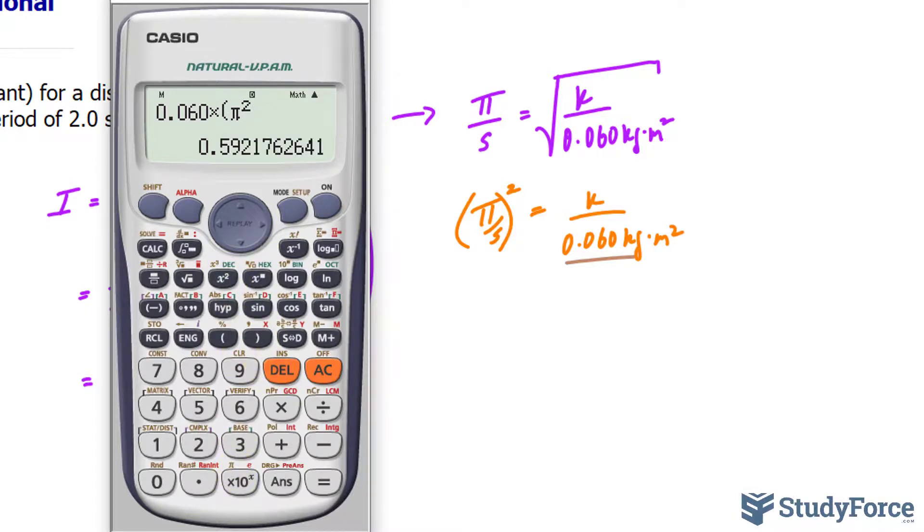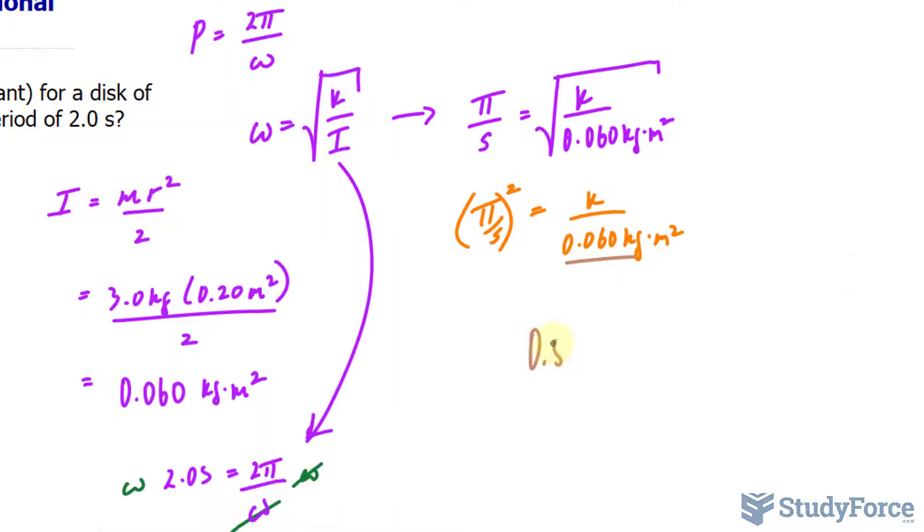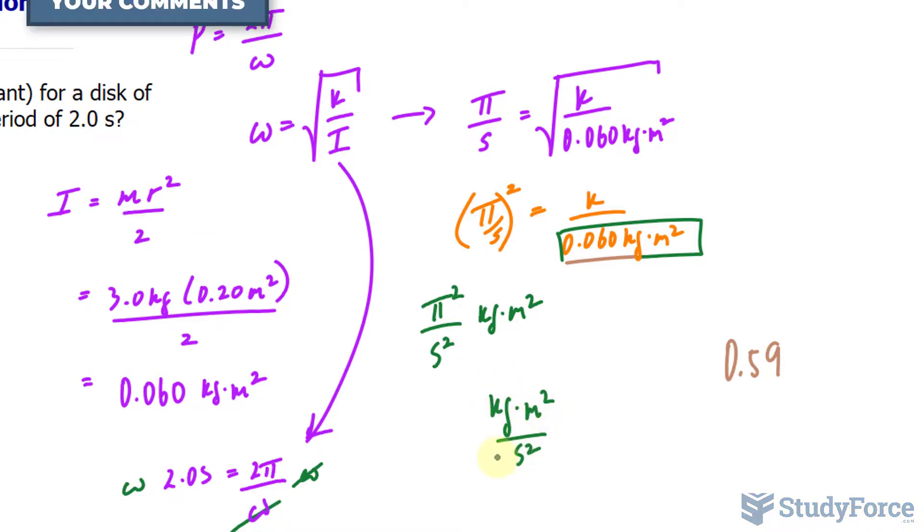And we end up with the value of 0.59. But what are the units? That's a good question. Well, this becomes pi squared over seconds squared. And over here, we have, after multiplying both sides by this factor, I have kilograms times meters squared at the top. In the end, this becomes kilograms times meters squared per second squared.